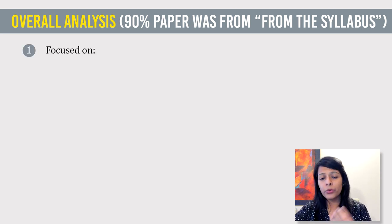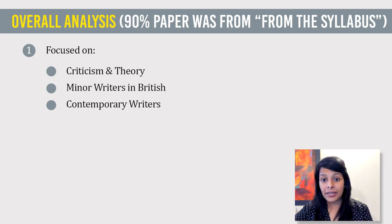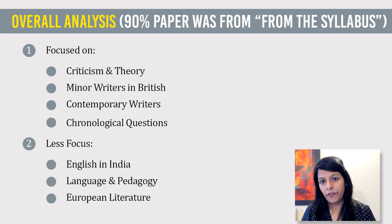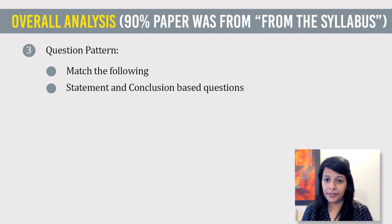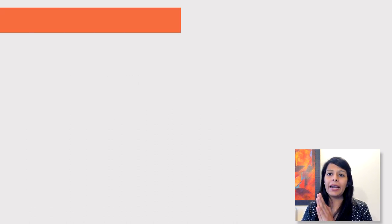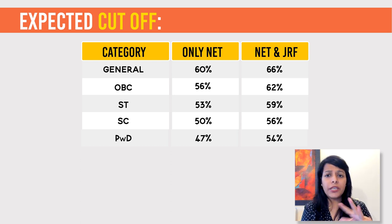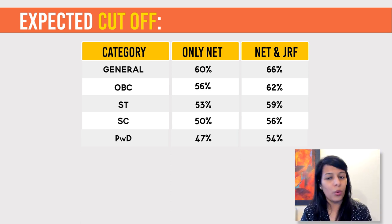Personally, I feel this time they focused more on Criticism and Theory, they focused on minor writers of British Literature, contemporary writers, and there were a lot of chronological questions. Their focus this time on English in India, Language and Pedagogy, and European Literature was quite low. In terms of question pattern, 'Match the Following' was seen more and there were quite a few statement-and-conclusion-based questions. My overall analysis is that the cutoff would be somewhere around 60% for NET general candidates, and 66 to 67% for JRF general candidates — meaning approximately 35 questions right in Paper 1 and 60 questions right in Paper 2.